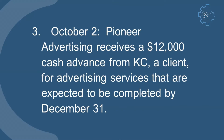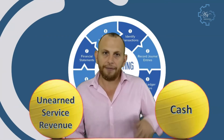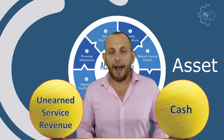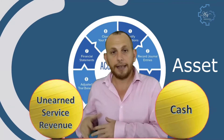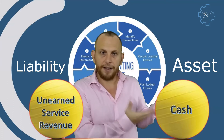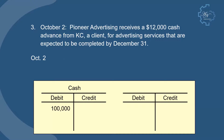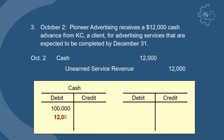October 2: Pioneer Advertising receives a $12,000 cash advance from Casey, a client, for advertising services expected to be completed by December 31. We have cash — an asset — and unearned service revenue — a liability. Cash increases, unearned service revenue increases. The journal entry is: debit cash, credit unearned service revenue for $12,000.